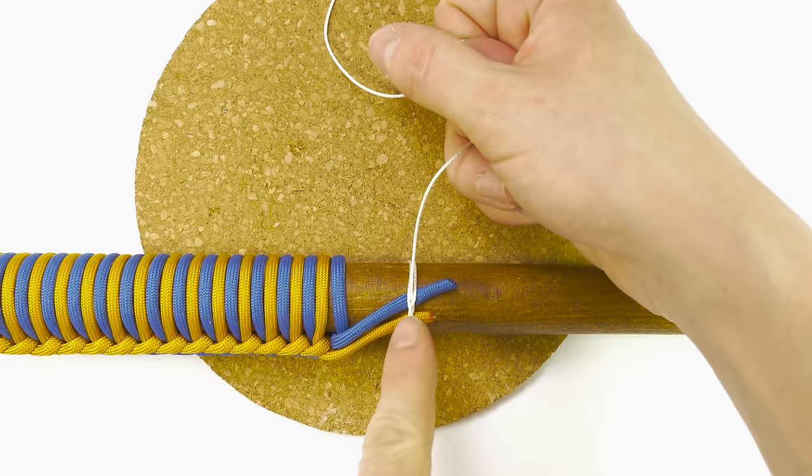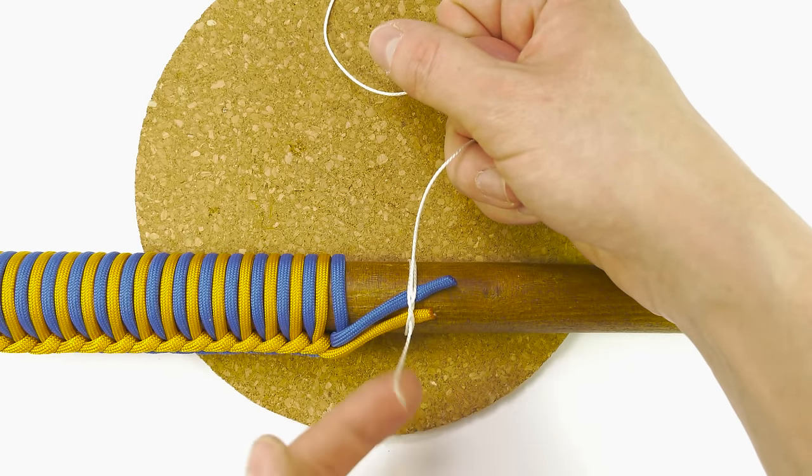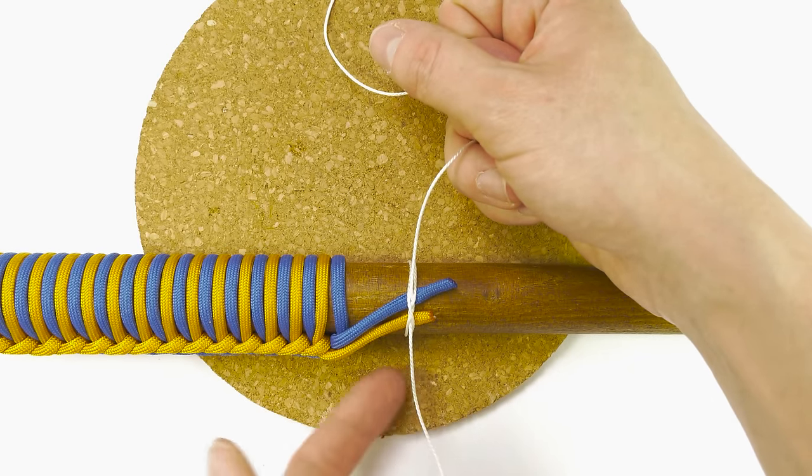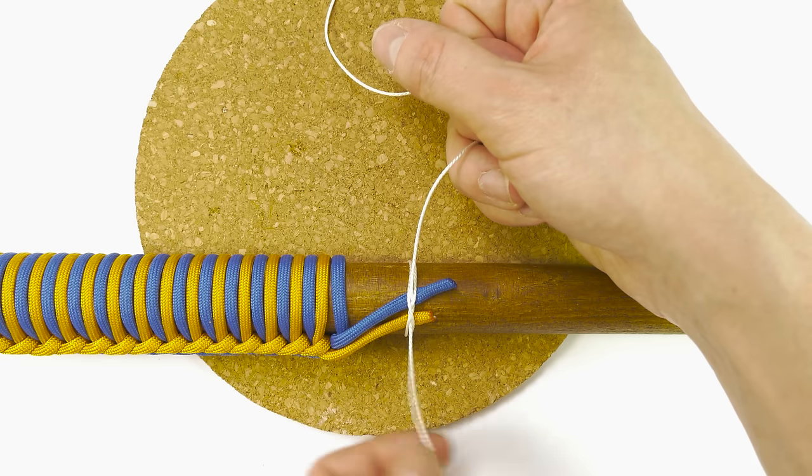So we have made a constrictor knot and we have a small part remaining in our standing end, which we will need later on.